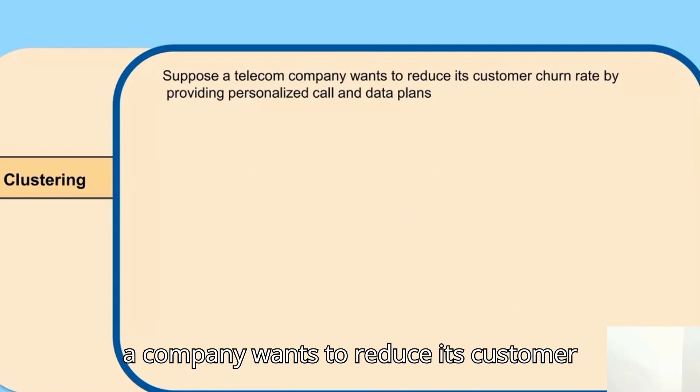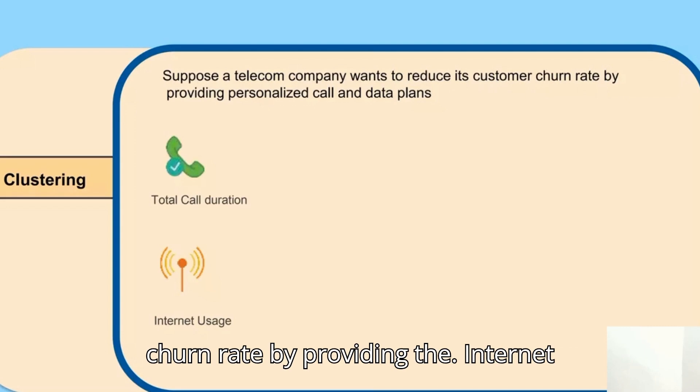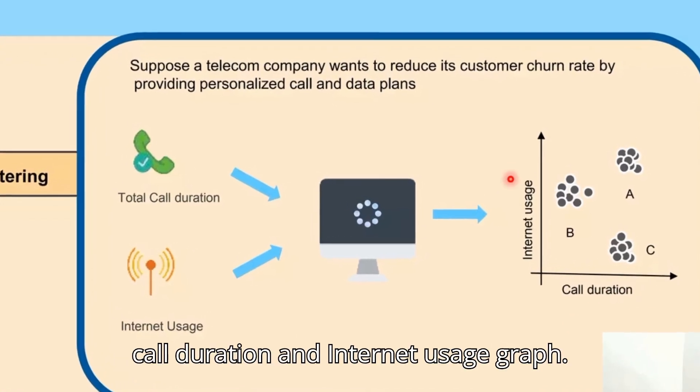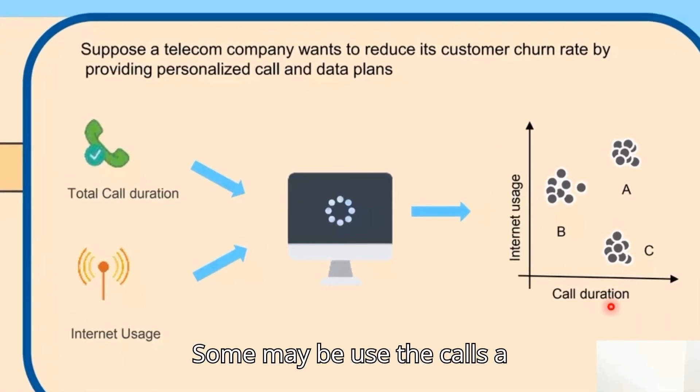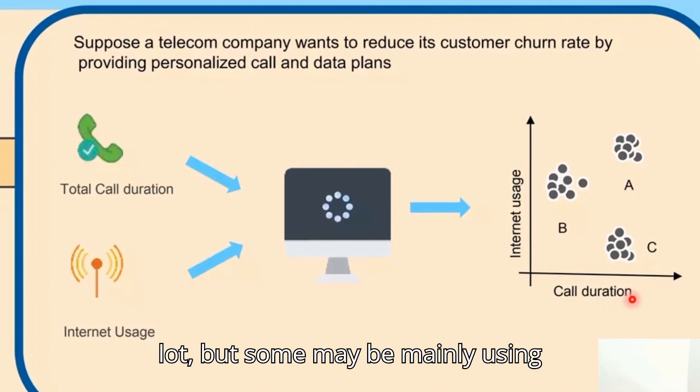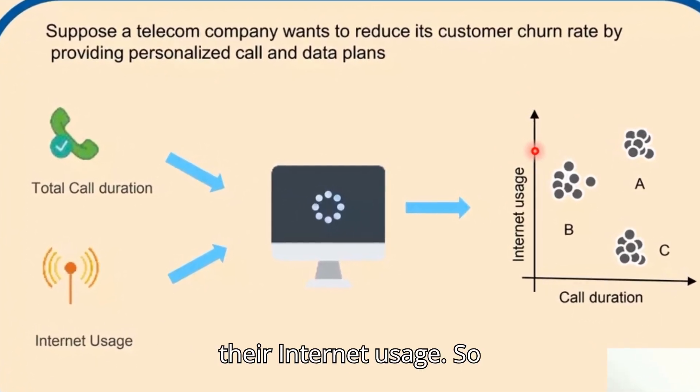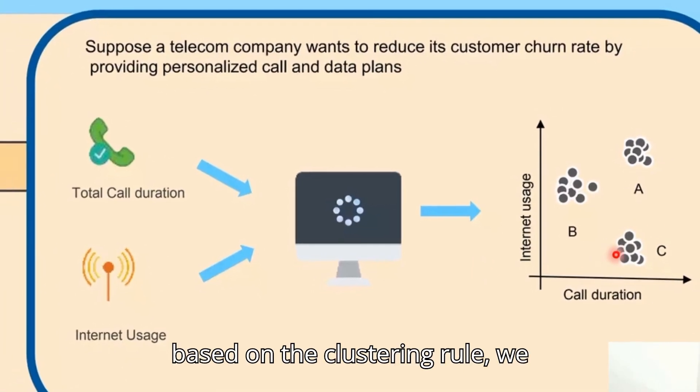One example is when a company wants to reduce its customer churn rate by providing internet usage and total call duration. Some may be using data but haven't used their calls a lot, so we have to identify them. The call duration and internet usage graph shows some may use calls a lot, but some may mainly use internet usage.